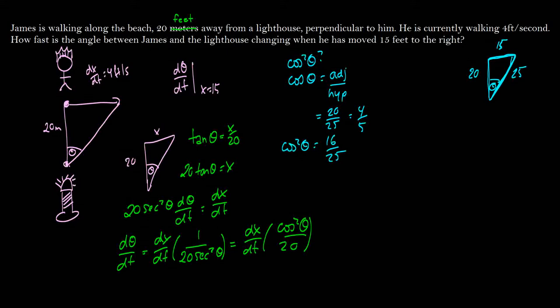Okay, so let's plug that in to this here. So we have dx/dt is equal to 4, which we got up here from our lovely picture. Here, cos squared theta is equal to 16 over 25, and that's divided by 20. So this is going to be equal to, well, 4 over 20 is the same thing as 1 fifth times 16 over 25.